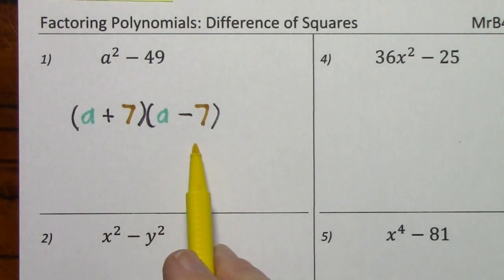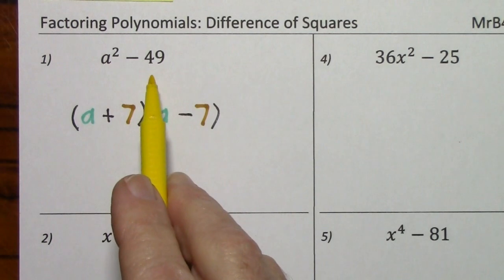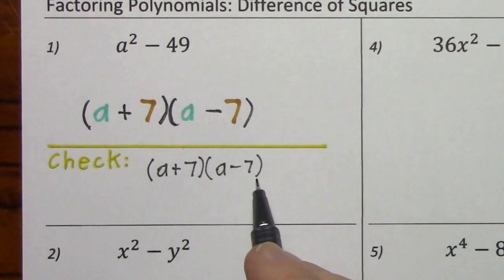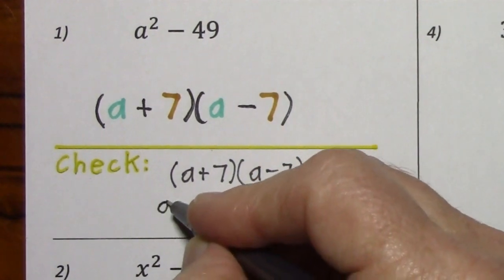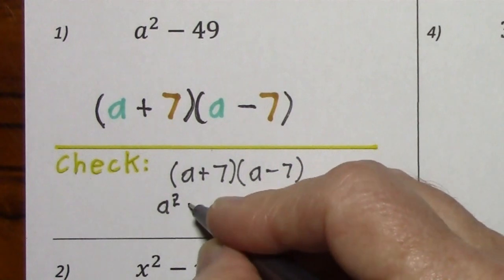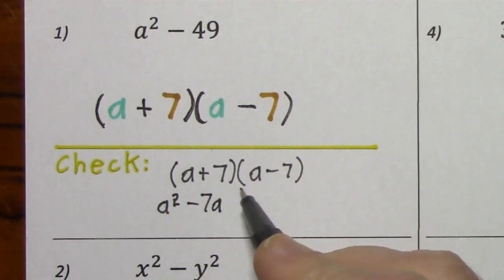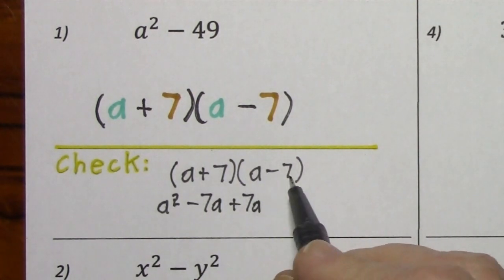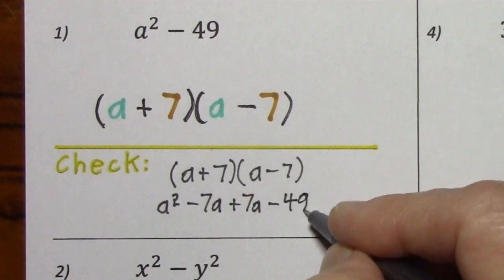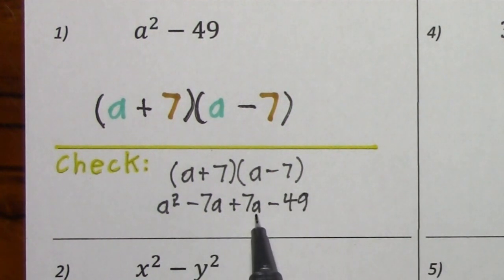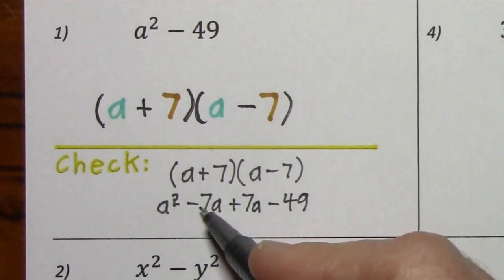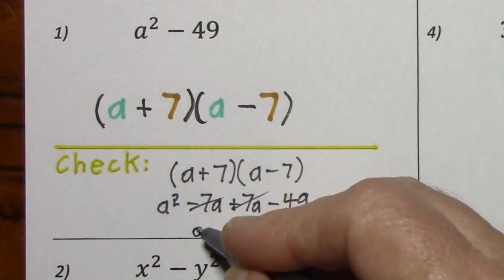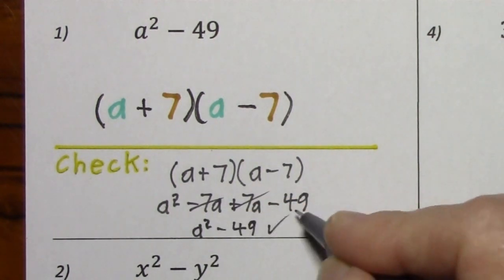It's a good idea to check this, just so you can see why you end up with only two terms. To check your answer, we'll multiply this out: a times a, a times negative 7, 7 times a, positive 7 times negative 7. You can combine your two middle terms — in fact, they cancel out. So you're left with a squared minus 49. This checks.